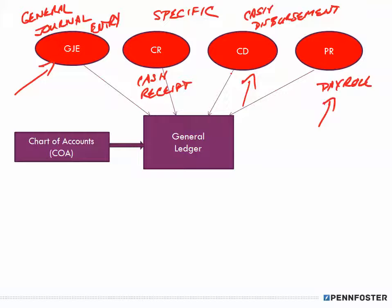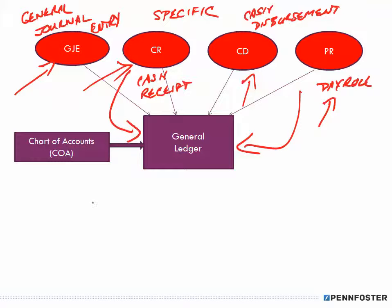Regardless of which journal you put an entry in, everything gets posted into the respective general ledger accounts. A journal is a journal — the name doesn't matter. Even if you mistakenly put a payroll entry into the cash receipts journal, that information will still end up in the proper general ledger account. Remember, the general ledger is the heart of the set of books. Information gets entered into your journals, but then it all gets posted into your general ledger accounts.